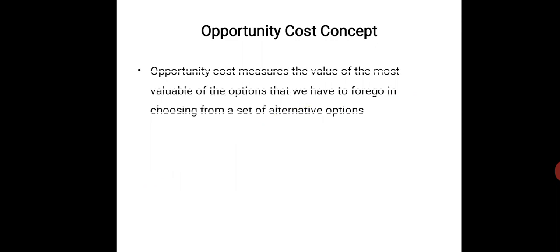When you choose one option, you are discarding the others. For example, if you decided to pursue B.Com, you had other options available. By choosing B.Com, you forgo those alternatives — and the value of the best foregone alternative is the opportunity cost. Opportunity cost measures the value of the most valuable option that we have to forego when choosing from a set of alternative options.